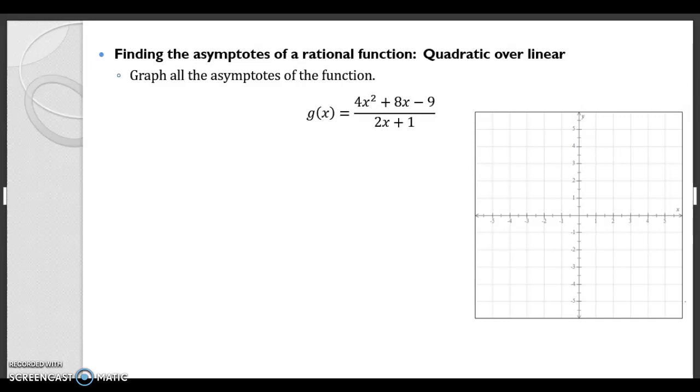If you remember, if we have a higher degree, so if n, the degree on the top, is more than m, then we don't have a horizontal asymptote. We don't have an asymptote like this, but we do have a different kind of asymptote and that is called a slant or oblique asymptote.